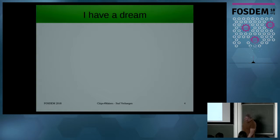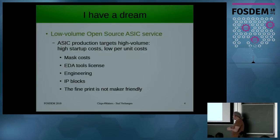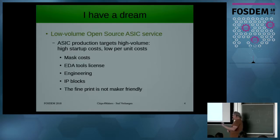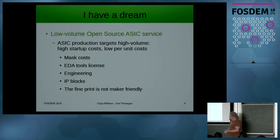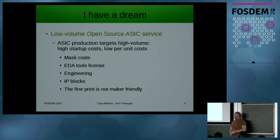So I have a dream. My dream is to be able to do low-volume, open-source ASIC service. Normal ASIC production targets high volume — they have high startup costs but low per-unit costs, and you have to earn back your startup costs by selling a lot of products. These startup costs are mask costs, the tools you use, the engineers who need to get paid, the IP blocks you need to pay for, and also — the first thing before people want to talk to you is signing an NDA — which is not very open-source friendly.